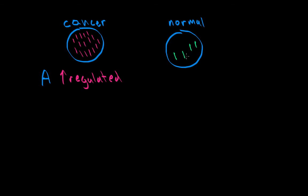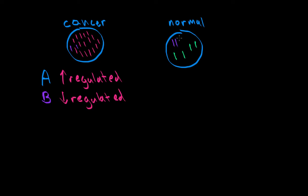Now, let's say we wanted to measure a bunch of different genes at the same time — genes A, B, C, D, and so on — and see which ones are either upregulated or downregulated. Let's also consider gene B, which is downregulated. If gene B is downregulated, there are fewer gene B mRNAs in the cancer cell — maybe just two — while in a normal cell there are a lot more gene B mRNAs.